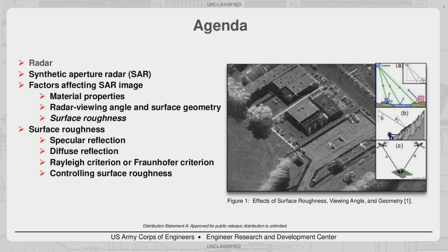We will define radar and synthetic aperture radar — SAR. After an overview of how SAR works, we will discuss the factors that affect SAR images, which include material properties, radar viewing angle, surface geometry, and surface roughness. We will then focus on surface roughness and discuss the effects on image appearance in SAR. The condition of a surface — either smooth or rough — results in specular or diffuse reflection and is determined by the Rayleigh or Fraunhofer criteria. By examining the physics behind surface roughness, we will determine the best mechanisms to enhance or degrade images in SAR.